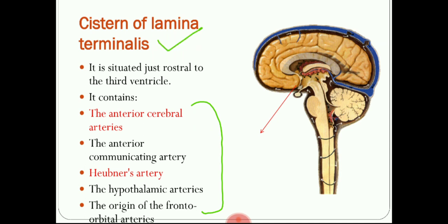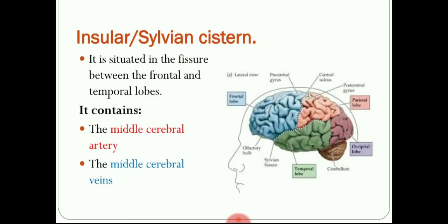Another cistern is the insular or Sylvian cistern, located in the region of the lateral sulcus or Sylvian fissure — between the frontal lobe and the temporal lobe. Its important contents are the middle cerebral artery and the middle cerebral vein.